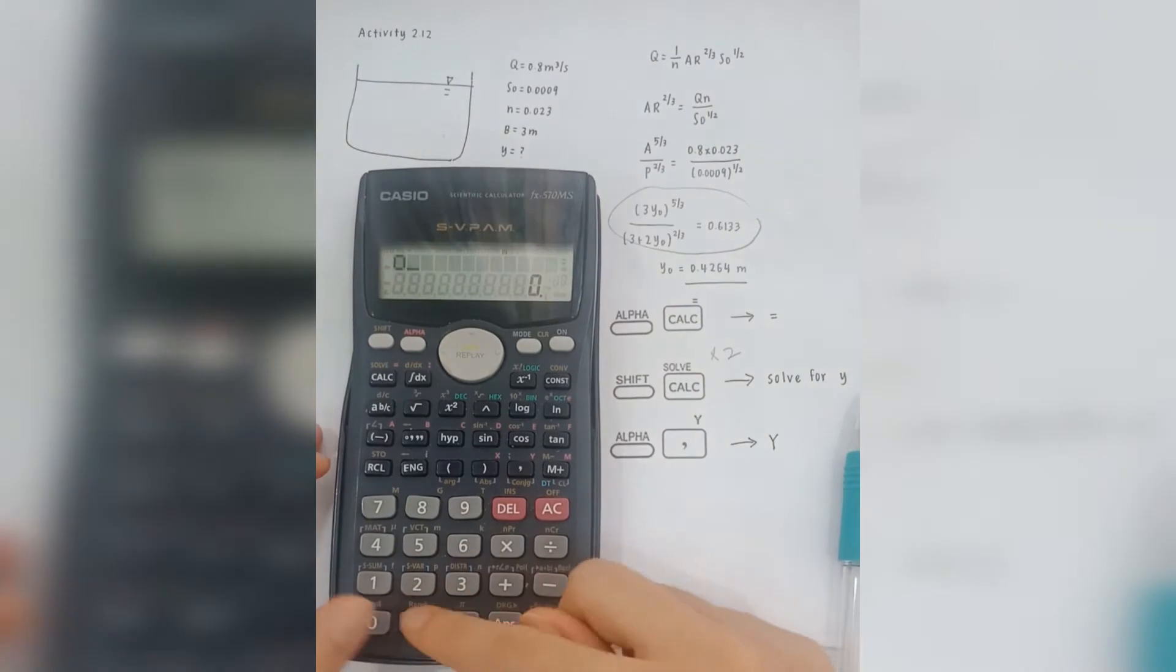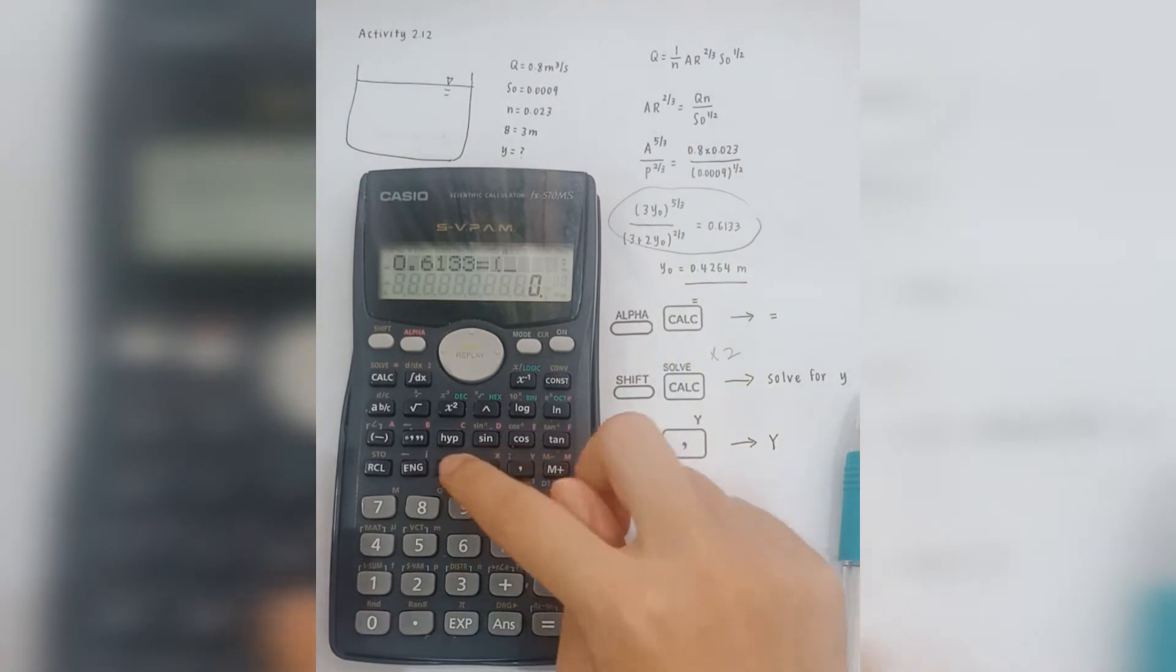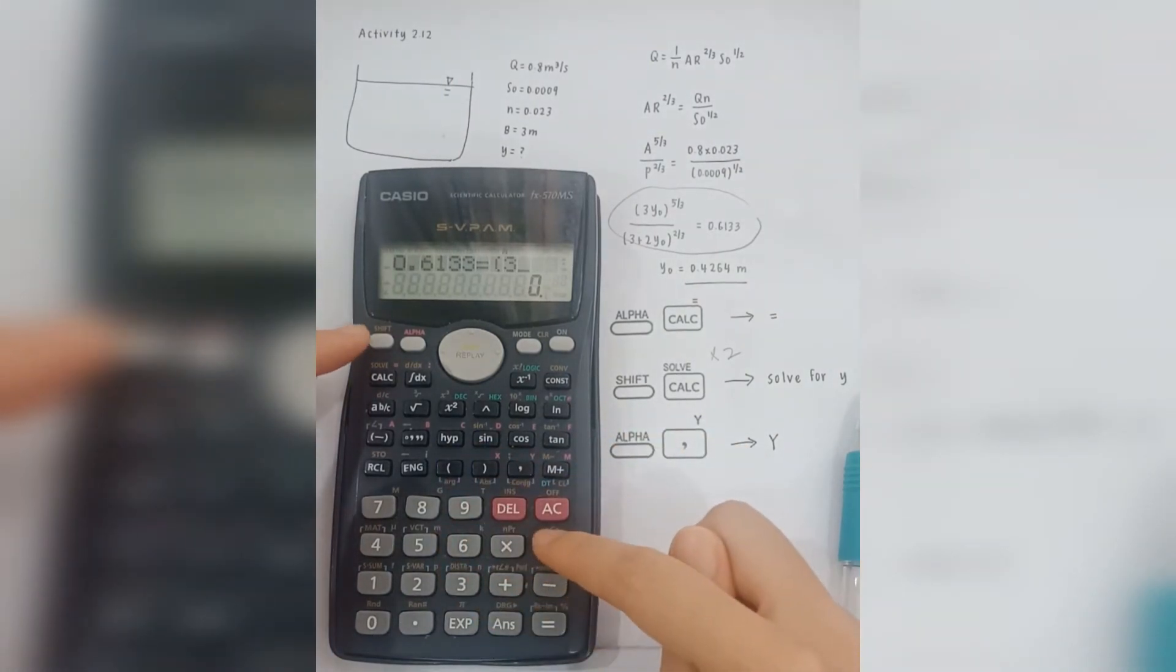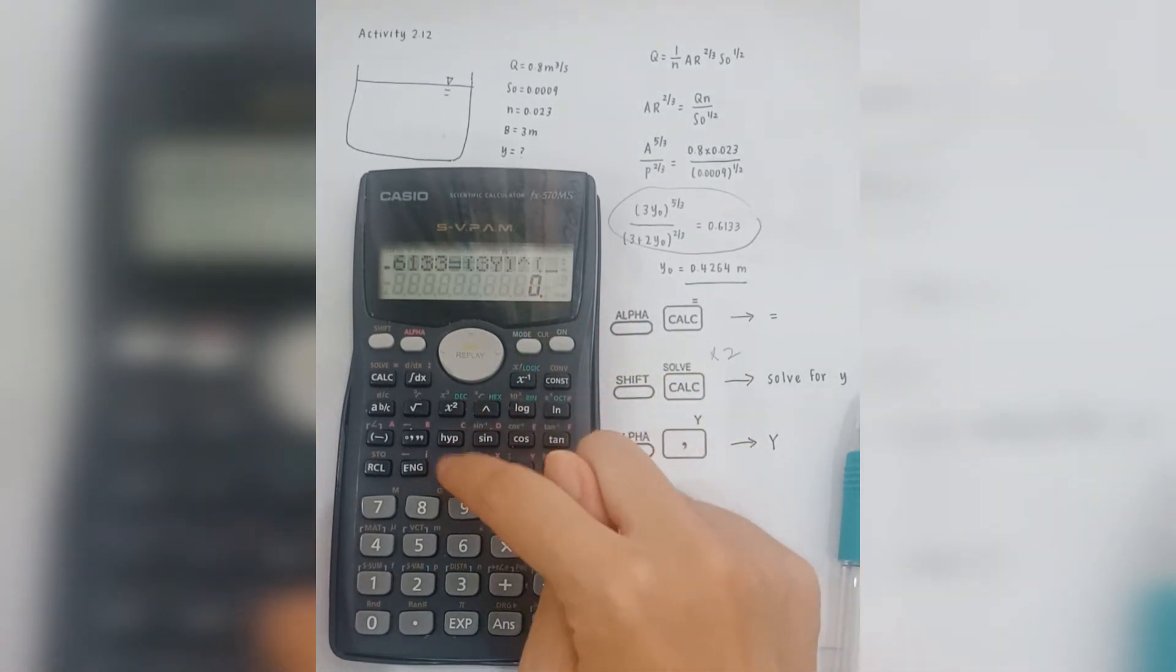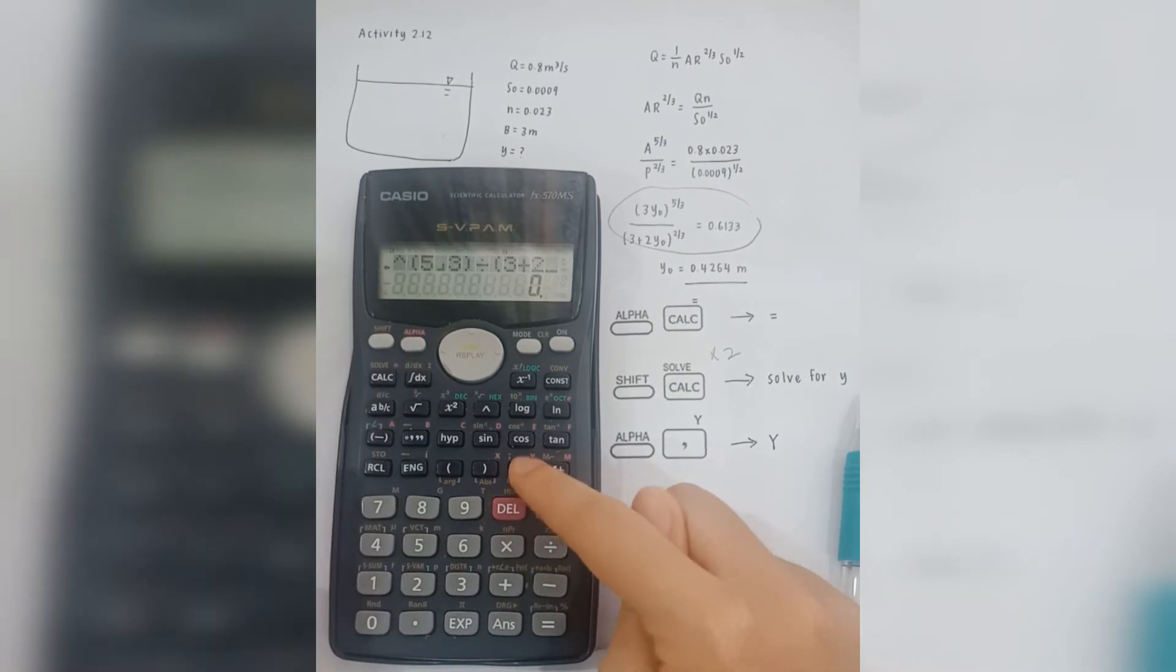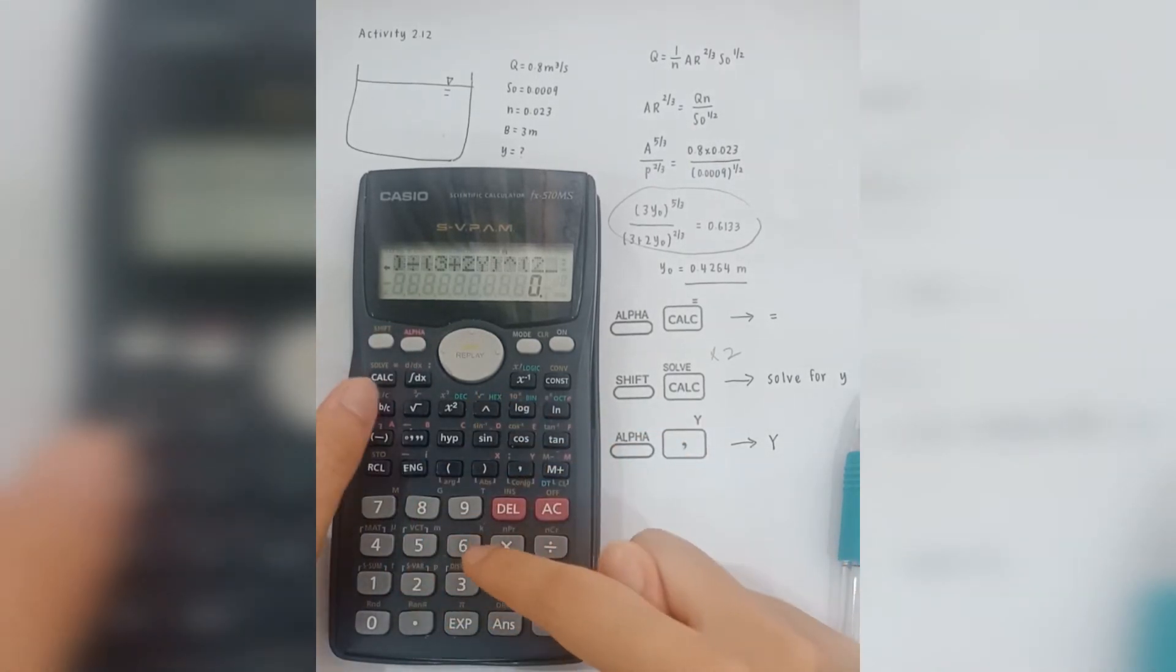So, 0.6133. You want to press the equal sign, you need to press alpha, calculate button, open bracket, 3, alpha, comma button in order to get the y, cross bracket, to the power of 5 over 3, divide by open bracket, 3 plus 2y, cross bracket, to the power of 2 over 3.